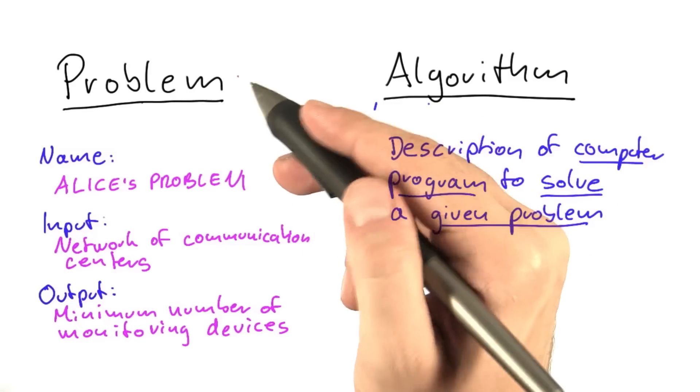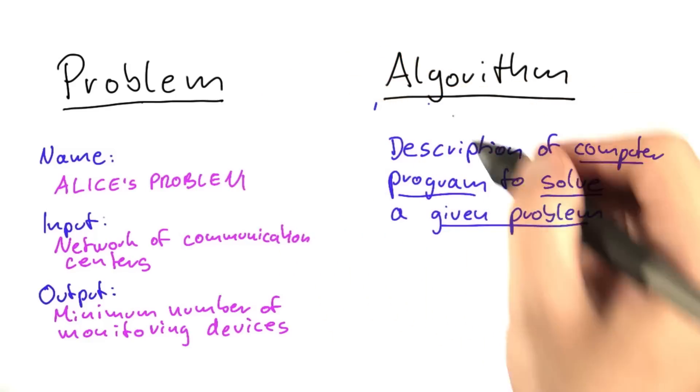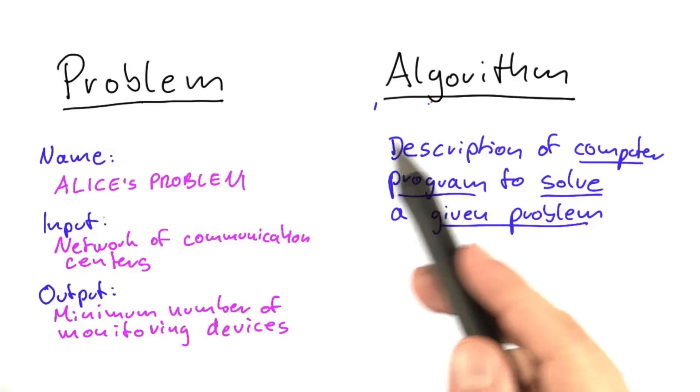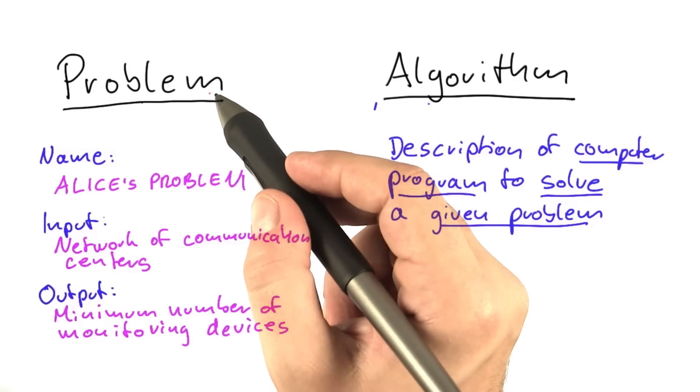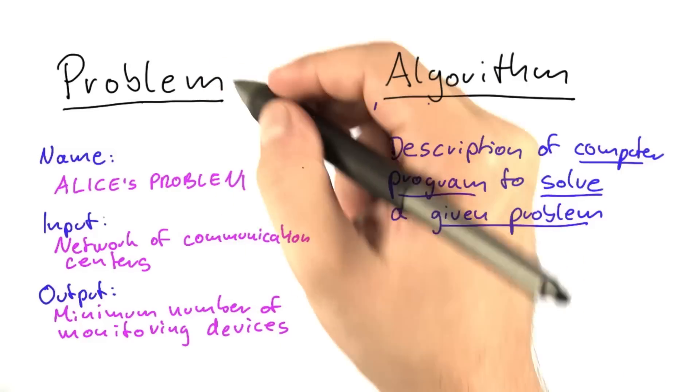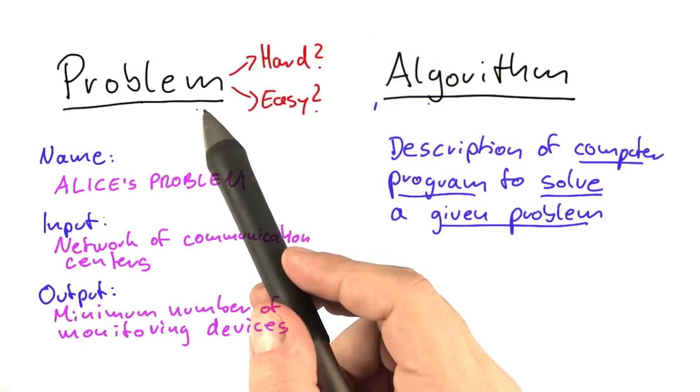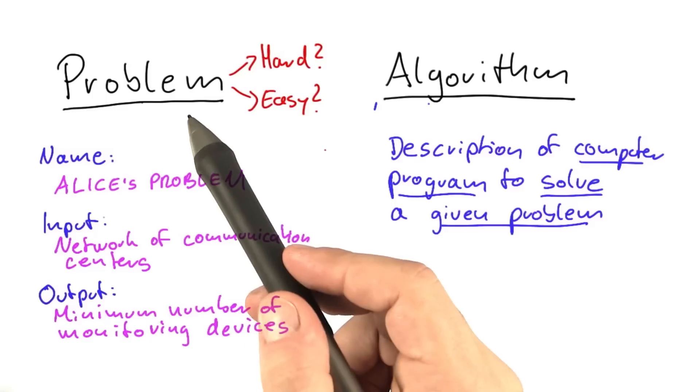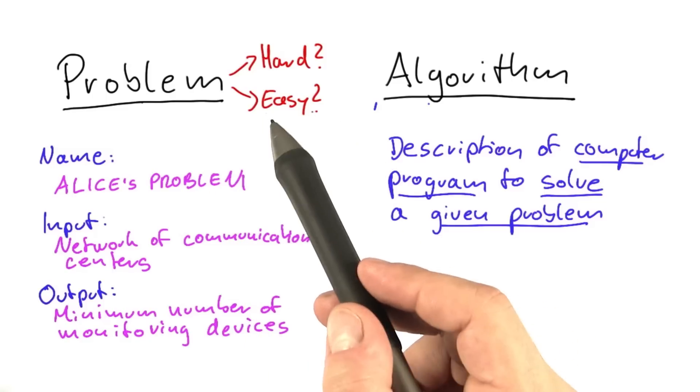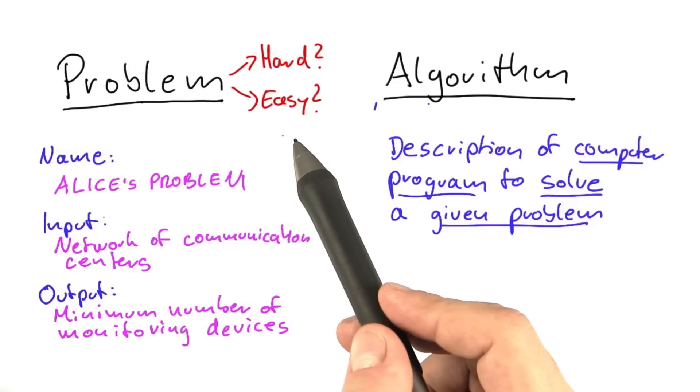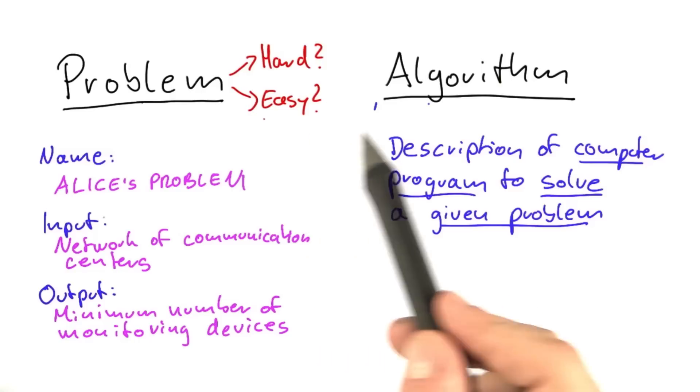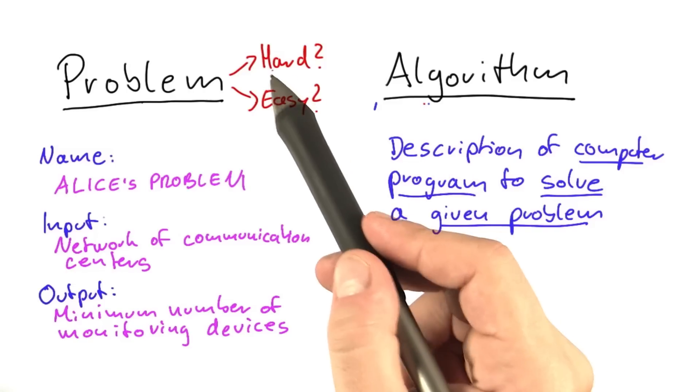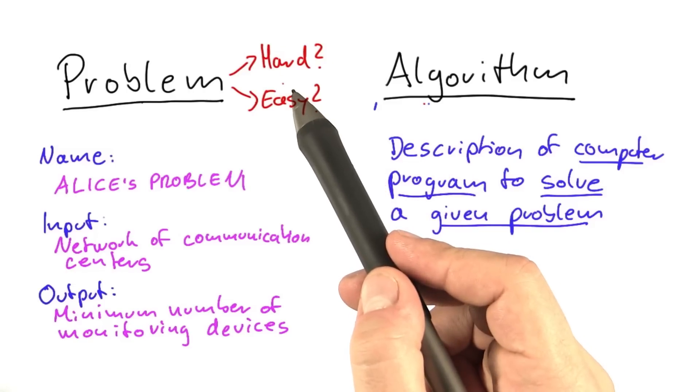The question we want to answer for Alice's problem, since the algorithm she has found is not very good, is whether the problem is hard or easy. What we mean by that is whether it's possible to find a more efficient algorithm. If that is the case, then we would call this problem an easy problem. And if it's not possible to find a better algorithm, then this would be considered a hard problem.